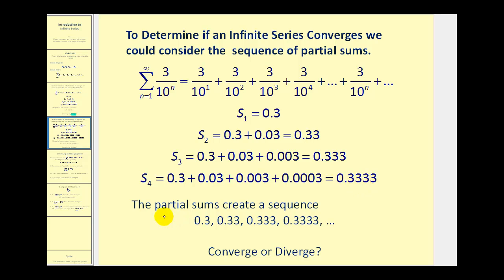The sum of the first four terms would be 0.3333. So the question becomes: does the sequence created by these partial sums converge? It looks like the three is going to repeat forever, and 0.3 repeating should remind you of the fraction one-third. So it does appear that this infinite sum will equal one-third, and therefore we say the series does converge.